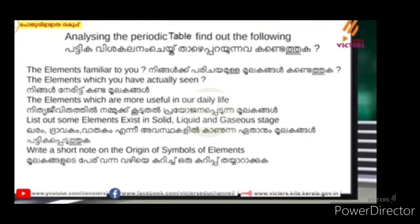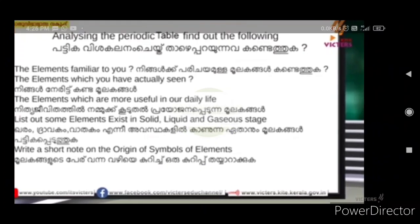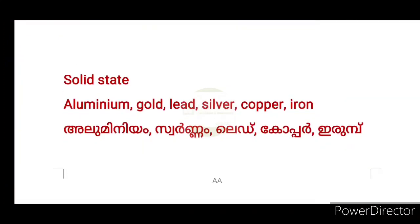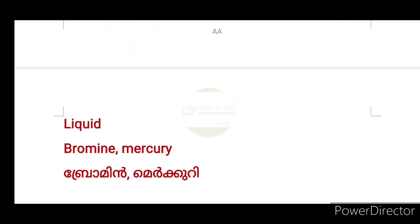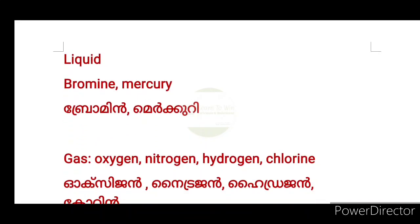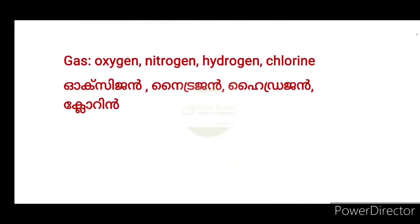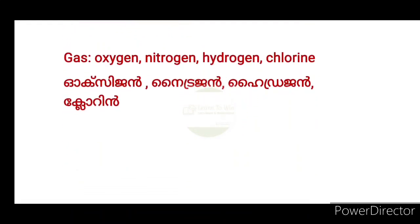List out some elements that exist in solid, liquid, and gaseous state. Solid state: aluminium, gold, lead, silver, copper, iron. Liquid state: bromine, mercury. Gaseous state: oxygen, nitrogen, hydrogen, chlorine.